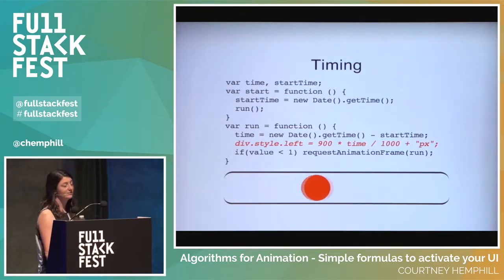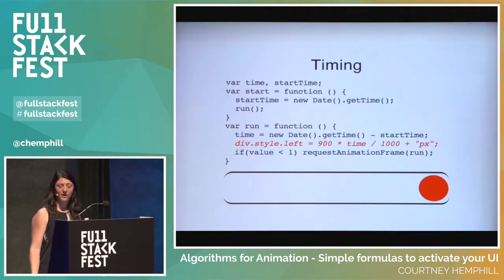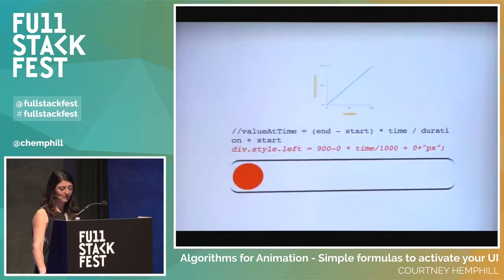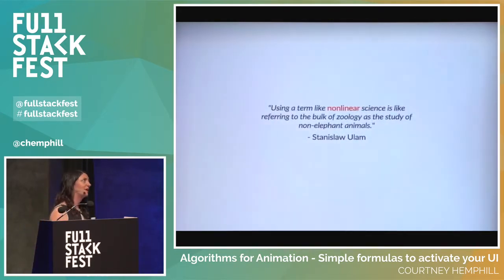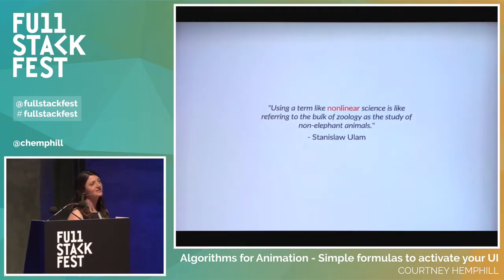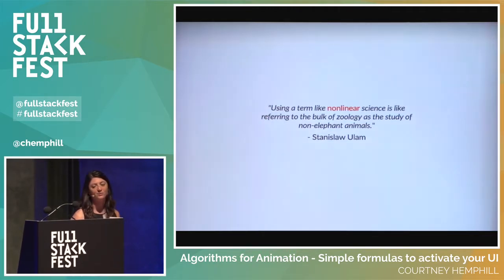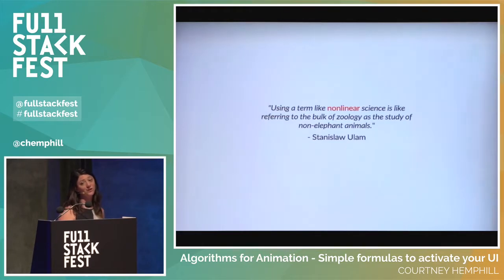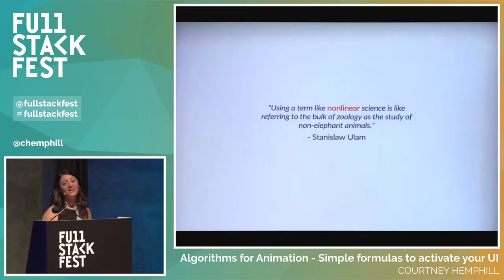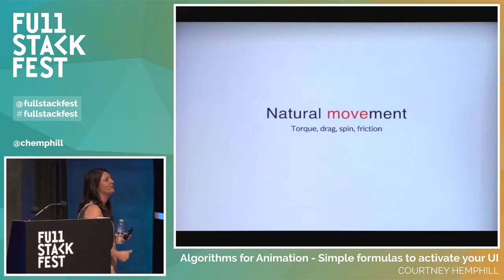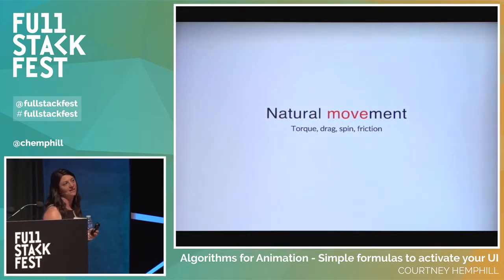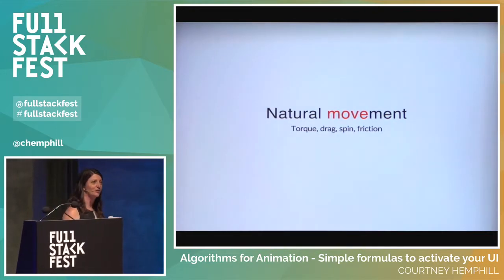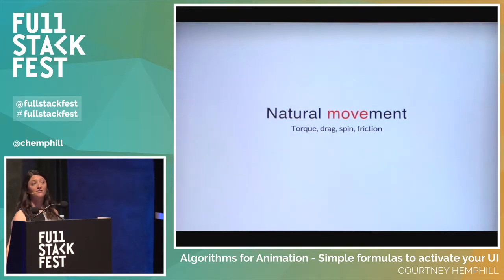Now that we have this consistent number to work with, linear animation is really boring — nothing in this world moves this way. Way long ago, people recognized this. Stanislaw Ulam had this great quote: 'Using a term like nonlinear science is like referring to the bulk of zoology as the study of non-elephant animals.' Nothing is linear in the world we live in — we have torque, drag, spin, friction. We need to represent that in our interfaces, or our users are going to feel like they don't trust what we're doing. That's the uncanny valley effect.